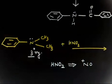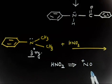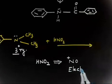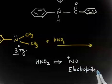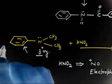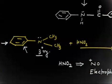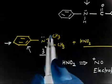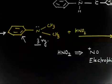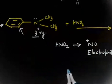HNO₂ basically gives the electrophile NO⁺. Now NO⁺ does not have any chance to attack the nitrogen because the tertiary nitrogen has no hydrogen. So the only option is that NO⁺ attacks inside the aromatic ring via electrophilic aromatic substitution. This electrophile has two options: it can attack at the ortho position or at the para position. Since this group is a large group, the ortho product is not the major product.